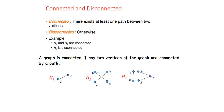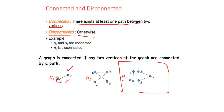A connected graph is one where there exists at least one path between any two vertices. For example, H1 has its vertices completely connected, making it a connected graph. A disconnected graph is one where there is no path between at least one pair of vertices. For H3, although all of A, B, C, D, E belong to the same graph, some components are disconnected. H2 is a completely connected graph.